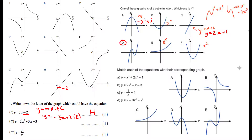Now the biggest power determines what type of graph it is — so if the biggest power is squared, that's a quadratic, and it's a smiley one because it's a positive number in front of the x-squared. It's got a y-intercept of minus three. Looking at the y-intercept, that's got to be D. A reciprocal graph looks like this, and the only one that can be is A.